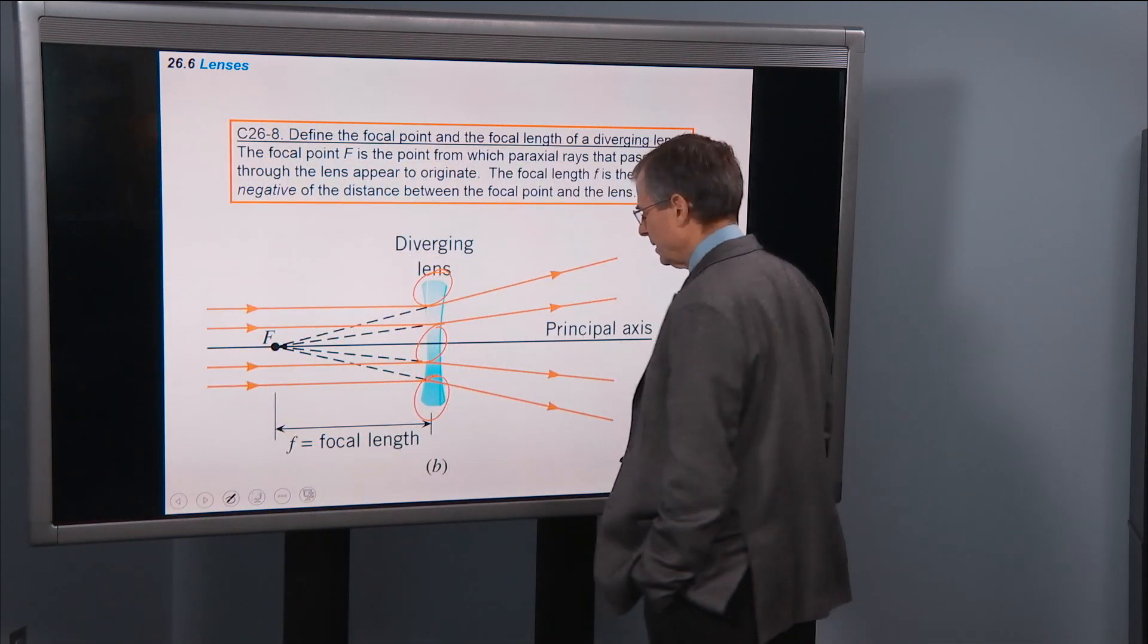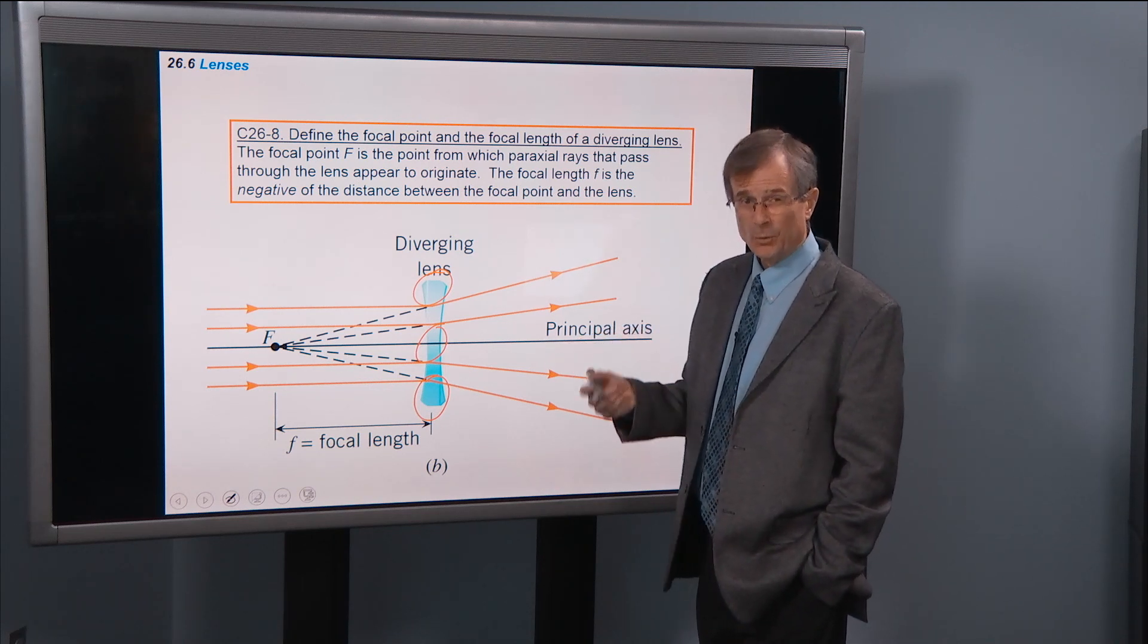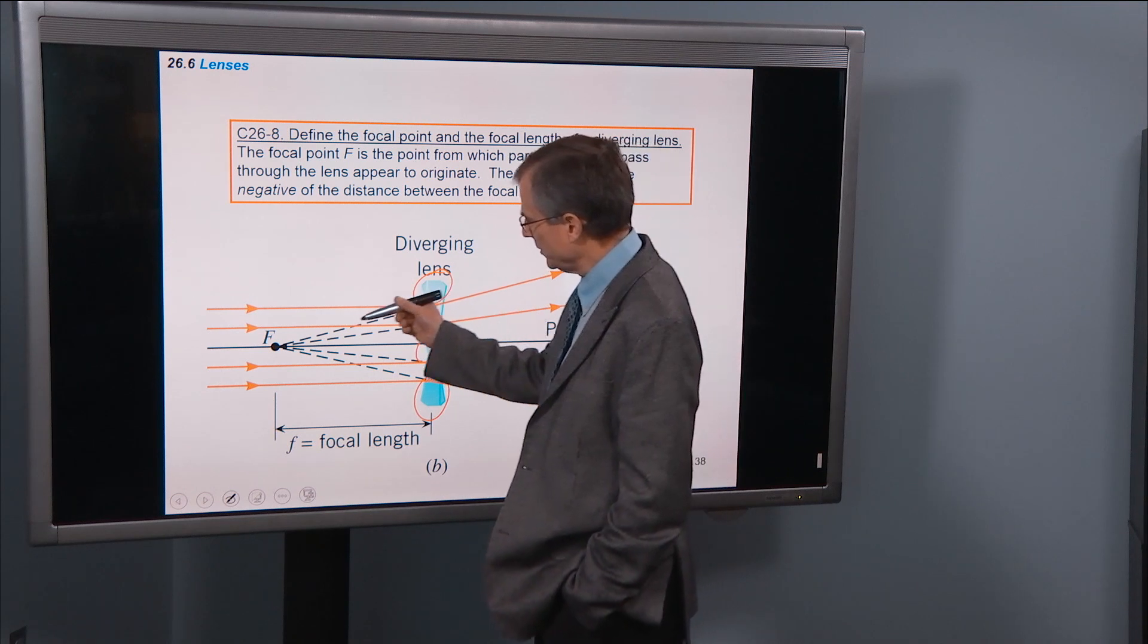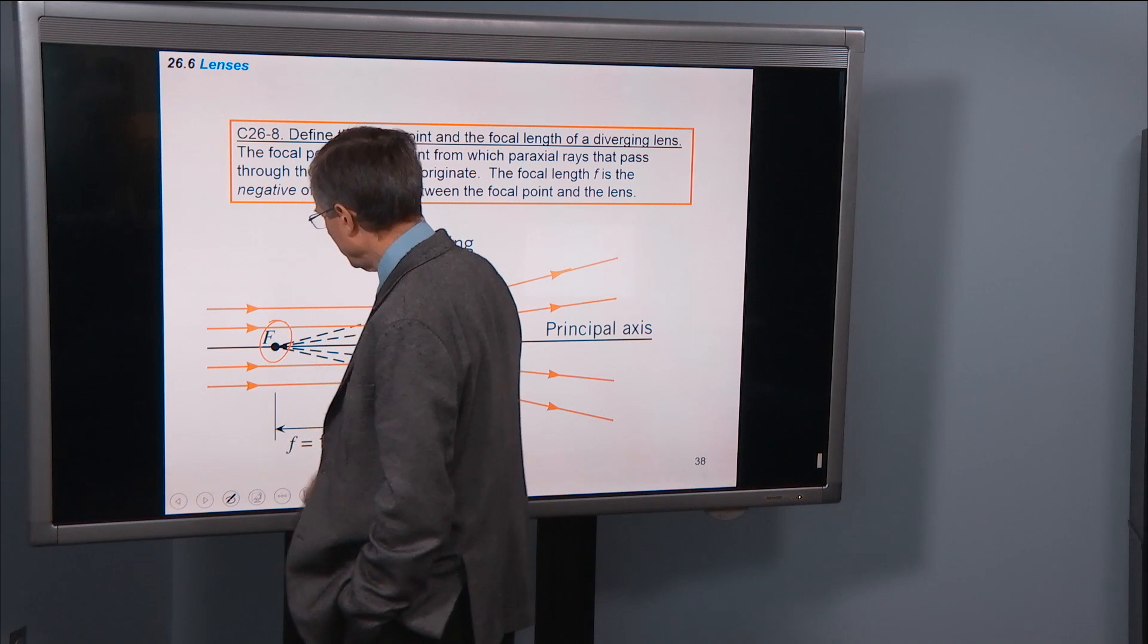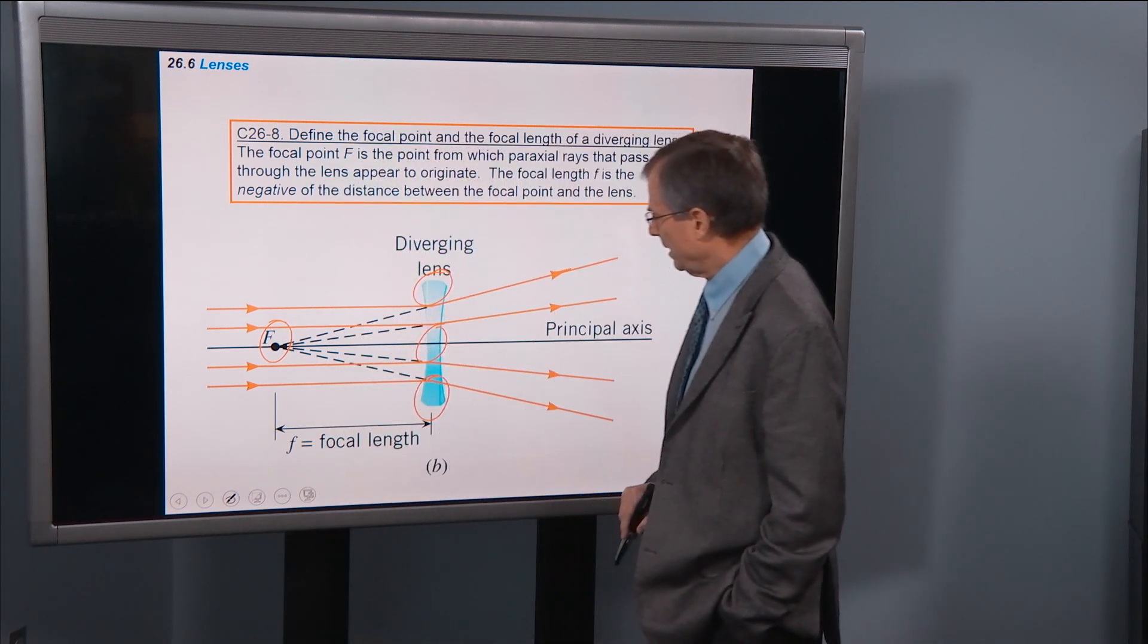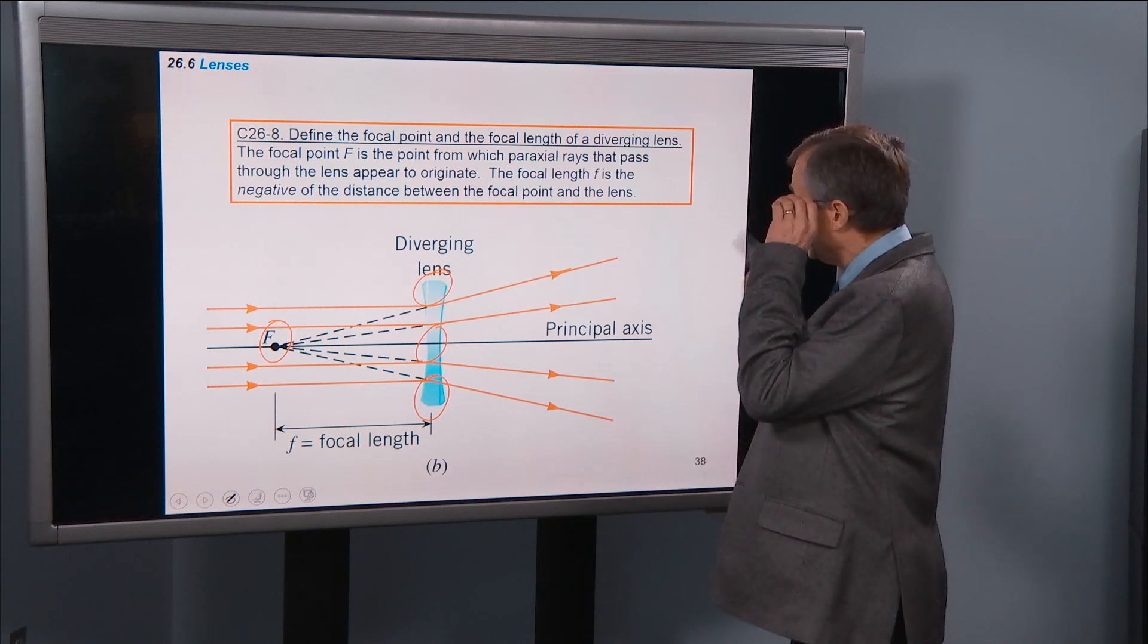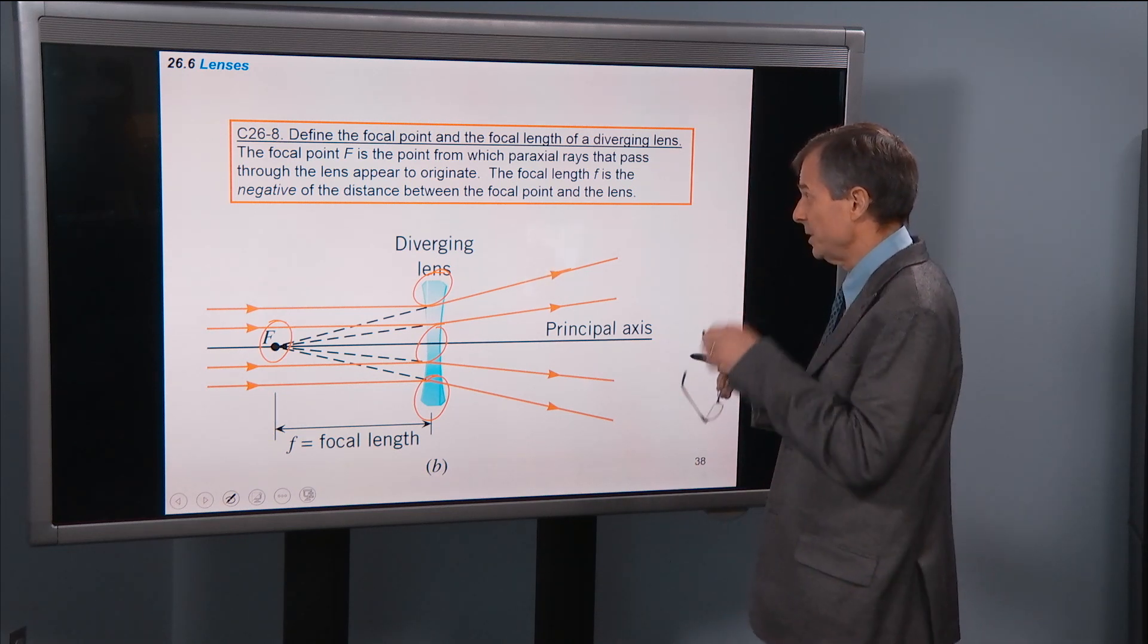So that's embarrassing, because they don't look like they're converging. In order to find the convergence point, we have to take extensions of those rays, shown here in the dotted black lines, to find what we call the focal point. And the focal point is the point from which paraxial rays that pass through the lens appear to originate.